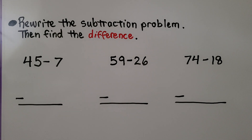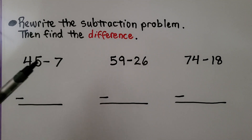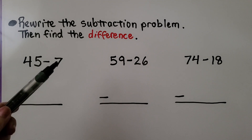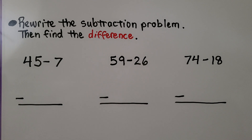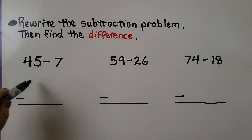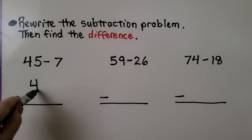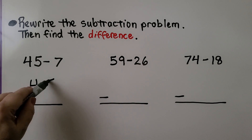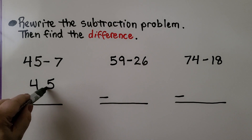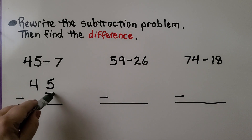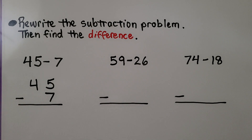Now it's telling us to rewrite the subtraction problem, then find the difference. We have 45 minus 7. That's only seven ones, so we write the four in the tens place, the five in the ones place, and the seven in the ones place.